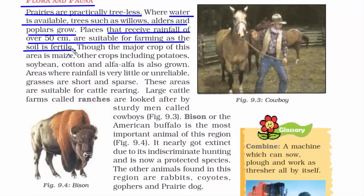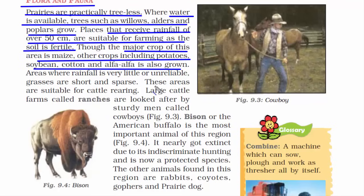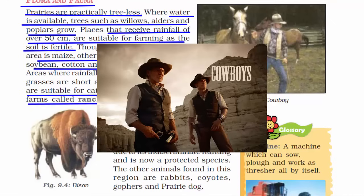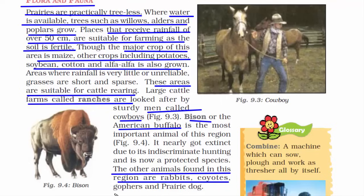This place has a lot of farms where major crops like maize, potatoes, soybean, cotton, and alfalfa are grown. Since it has a lot of grasses, it is suitable for cattle rearing and grazing. As you may have seen in movies, in America there are cowboys with huge ranches where they have bisons and American buffalo. Other animals found here include rabbits, coyotes, gophers, and prairie dogs. That was all about the flora and fauna of this place.